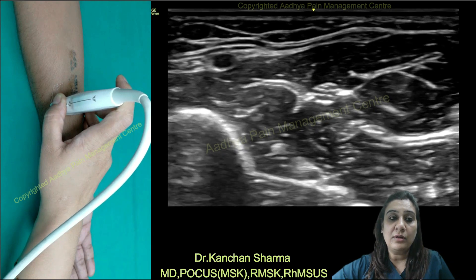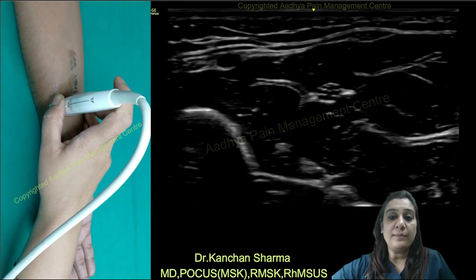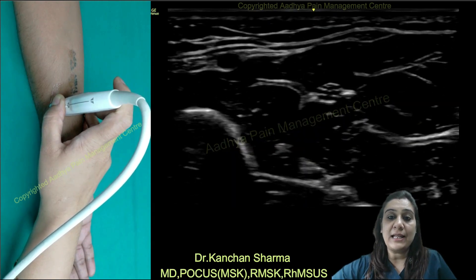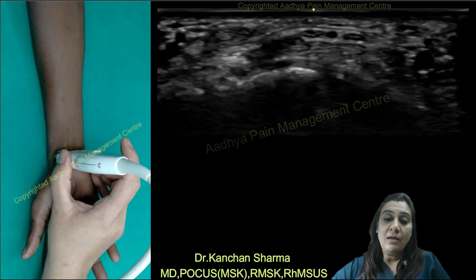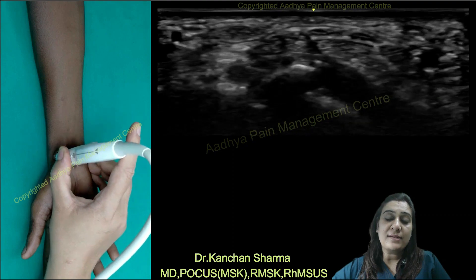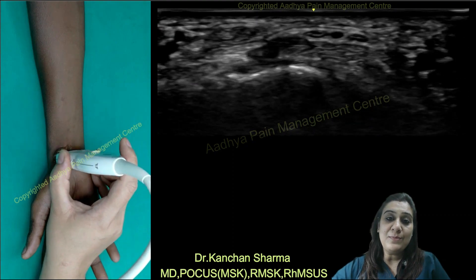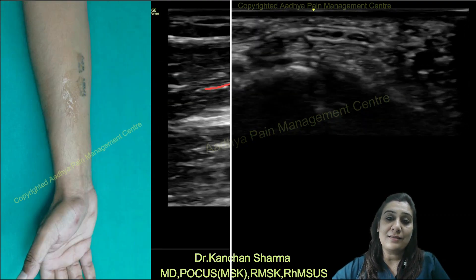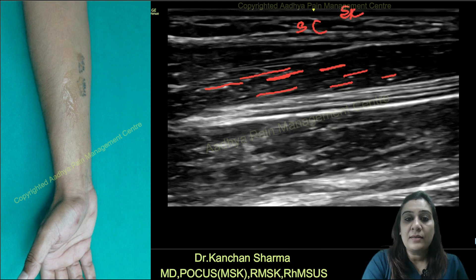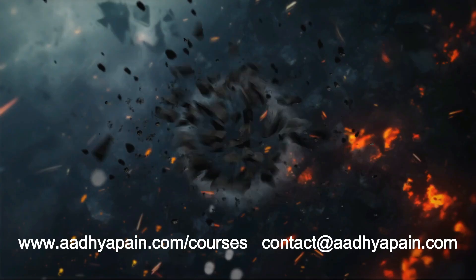The moment I increased the depth, you can see that the median nerve has become very small and looks darker. Now I am not able to visualize any of the structures clearly. I am trying to align my beam so that I will be able to look at the tendons. This one is the nerve, which is having a high problem.